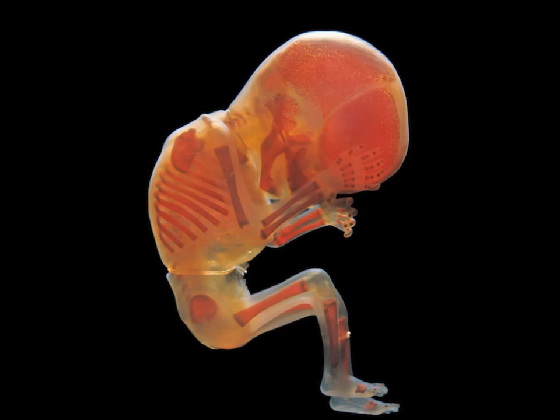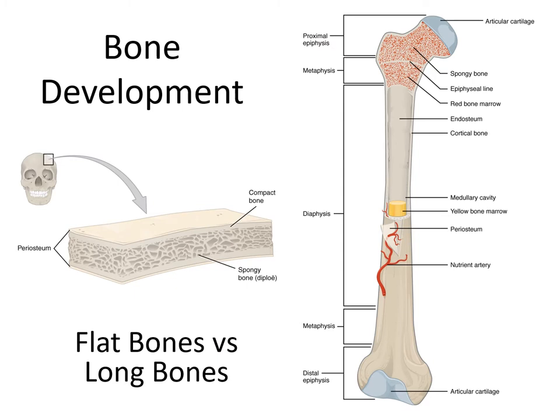Here you're seeing the same thing with a human embryo, though in this case the cartilage hasn't been stained. The long bones are partially ossified — partly turned to bone — but there's still a lot of clear material which is the cartilage, visible especially well in the fingers. Looking at the skull, you can see the separate bones are ossifying and mineralizing as separate entities and growing together. Flat bones and long bones don't just differ with respect to their shape — they differ with respect to how they develop.